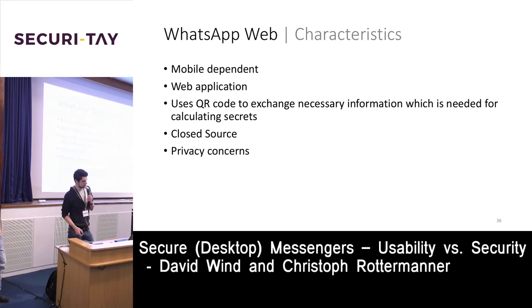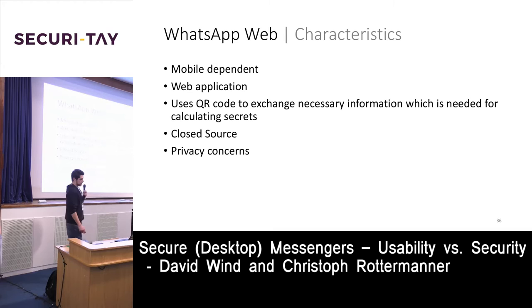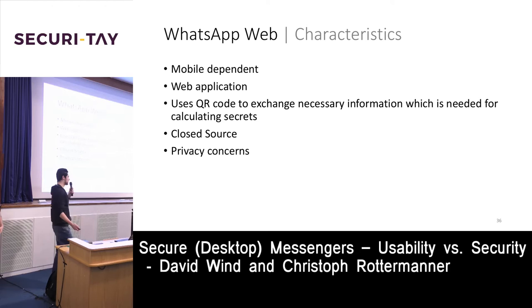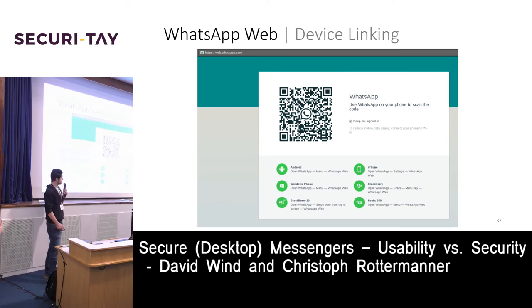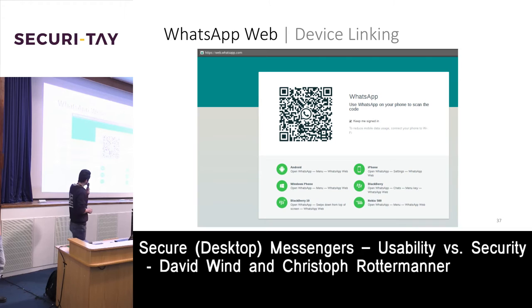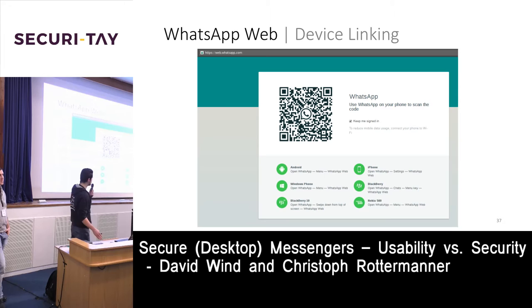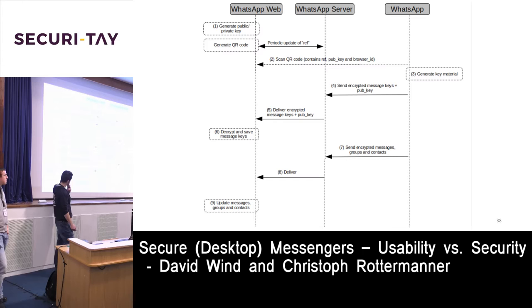WhatsApp Web also uses a QR code for calculating necessary secrets, is closed source, and there are some privacy concerns. When you scan the QR code in the WhatsApp application, there is a remark saying 'to reduce mobile data usage, connect the phone to Wi-Fi' — confirming the phone needs an internet connection, as messages are uploaded from the smartphone to the web application.